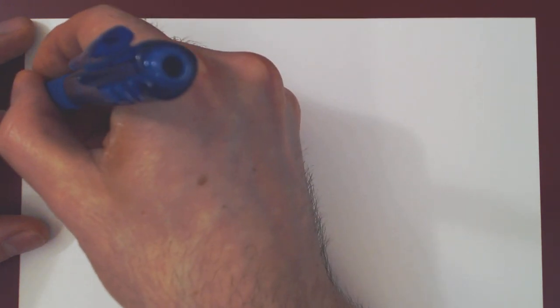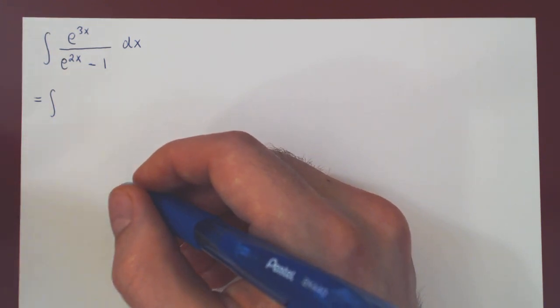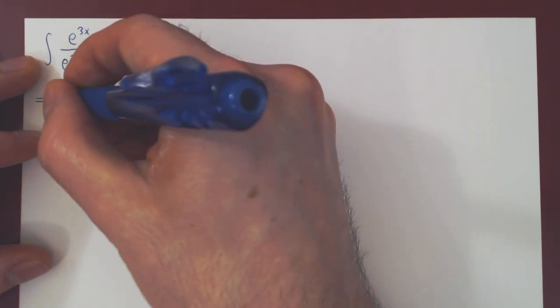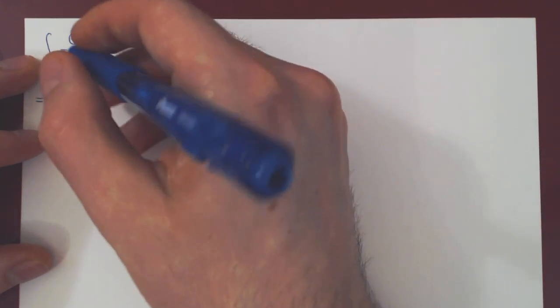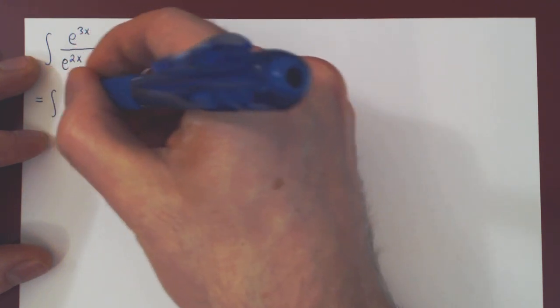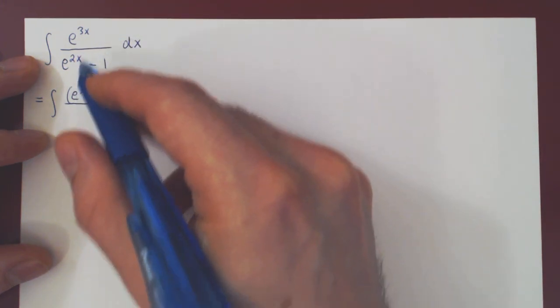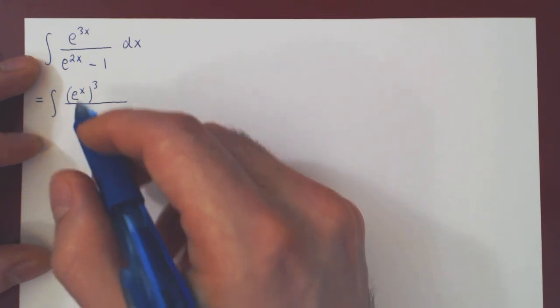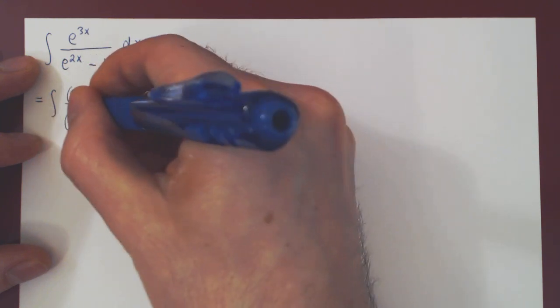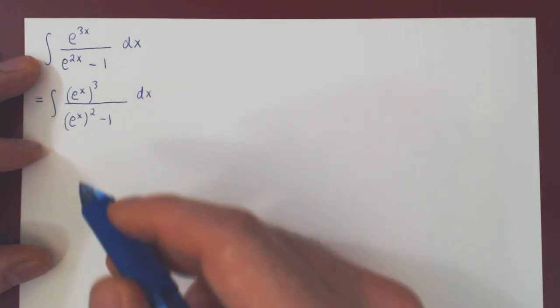Let me rewrite the integral in what may look at first as a trivial rewriting, but hopefully it will make the problem a little more explicit. Instead of e to the 3x, I will write e to the x cubed. If you double exponentiate, you of course multiply the exponents. And instead of writing e to the 2x, I will write e to the x all squared. And hopefully now, the problem is a bit more transparent.